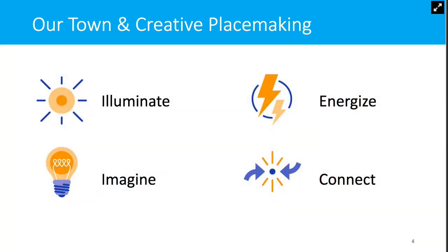Good applications are successful at: one, articulating a community need or goal to be addressed by the proposed project; two, describing an arts, culture, or design strategy for addressing that need or advancing that goal; and three, making a compelling argument as to why the arts and cultural strategy is the right one, and how it will support your community toward desired goals and outcomes. Arts, culture, and design can play a unique role in community development by illuminating forgotten or underappreciated local assets, injecting new energy around a particular local issue, place, or economy, helping communities imagine new possibilities, and connecting people across divides, both physical and social.